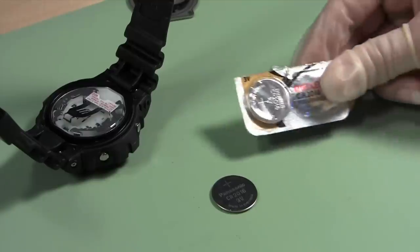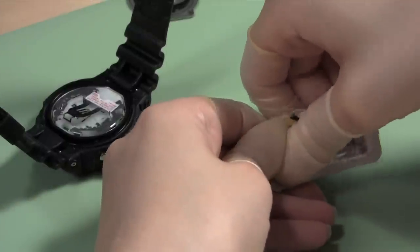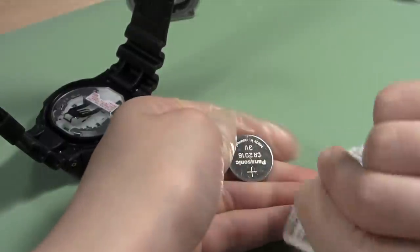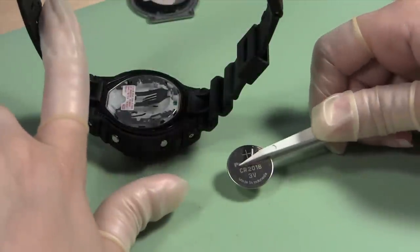Using the number from the old battery, find your replacement battery. Take the new battery out of the package and pick the battery up with the plastic tweezers. Make sure that the side of the battery with the engraved number is facing upwards.